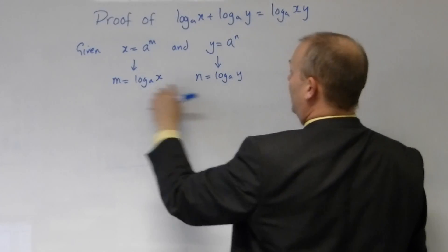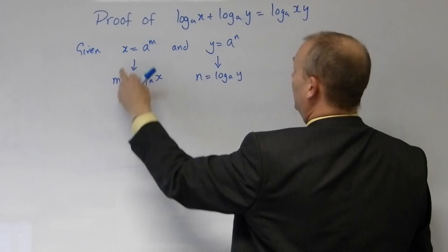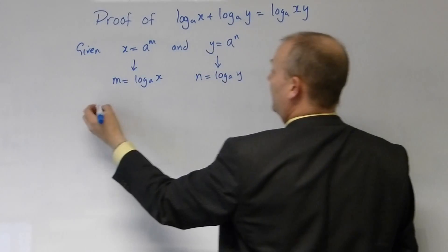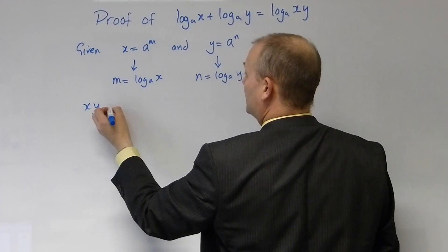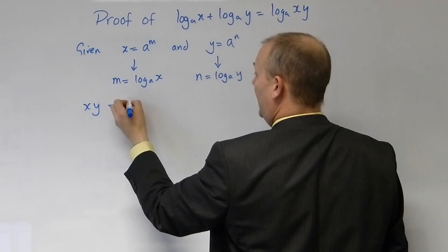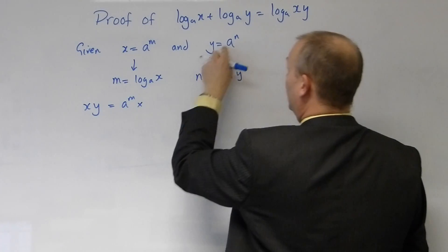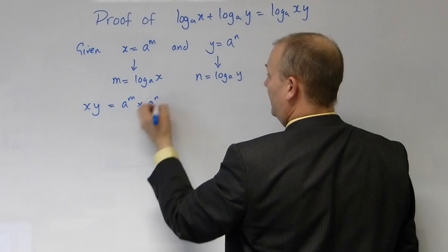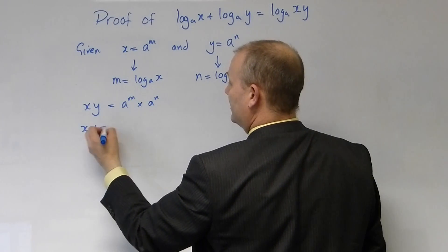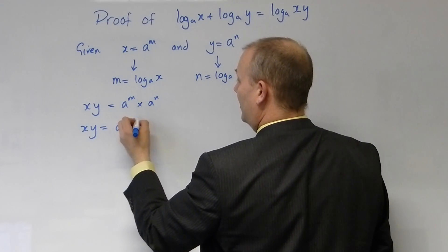Now, if we take the two terms and multiply them together, then x times y is a to the n times by a to the n, and we add the powers.